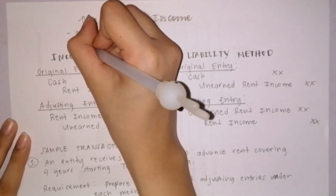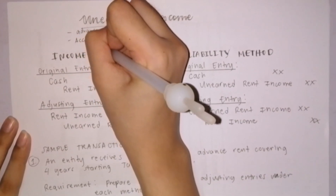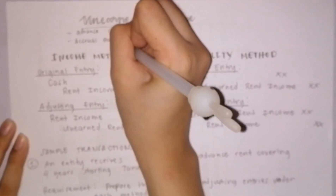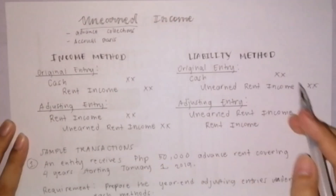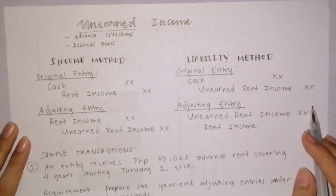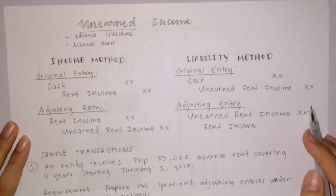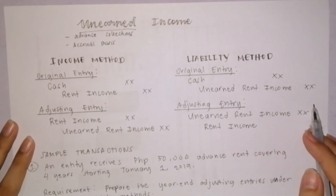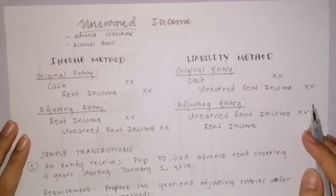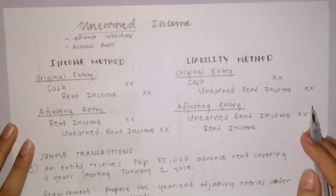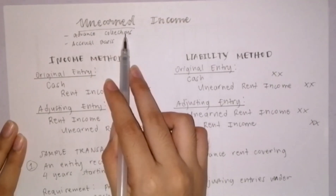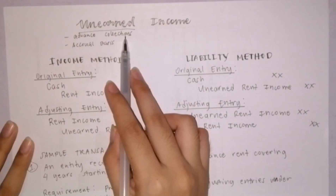Also, accrual basis of accounting is used. It says that income is considered earned when services are already rendered and goods are already delivered to the customers. Thus, unearned income is a liability on the part of the company.